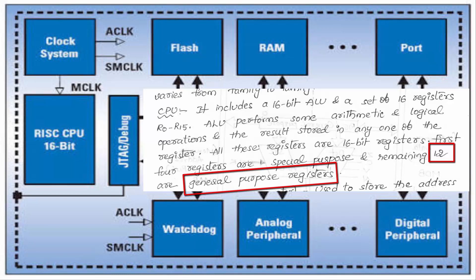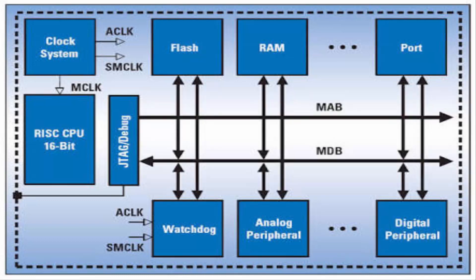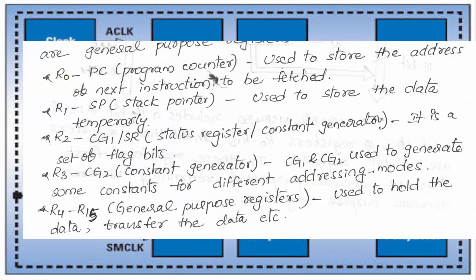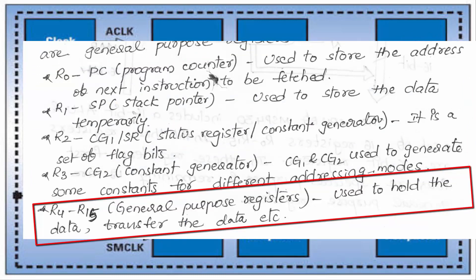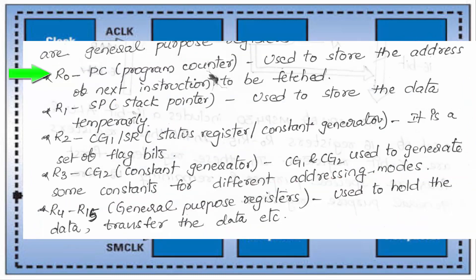R0 is the Program Counter, used to store the address of the next instruction to be fetched. R1 is the Stack Pointer, used to store data temporarily on the stack.